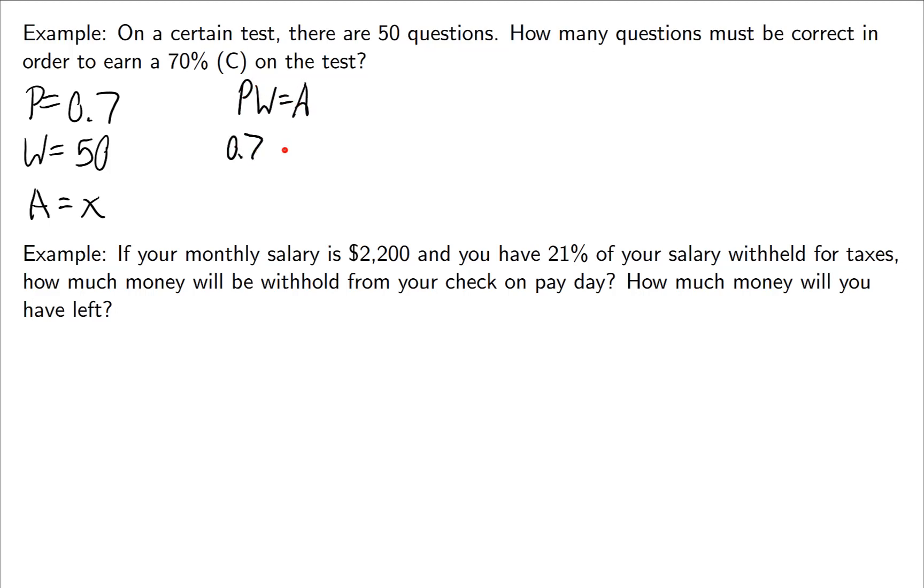Now let's just use the formula pw equals a. p is 0.7, w is 50, and we're searching for the number of questions that will give us that 70%. This is easy enough to solve. You just multiply the two together and you get 35, let's put a unit, of questions. So if you get 35 questions correct, then you will earn a 70% on the test.